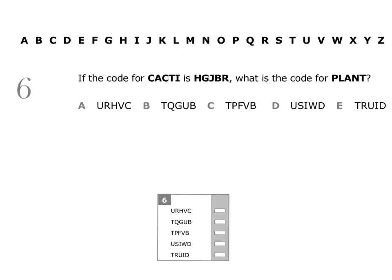Question six: if the code for cacti is HGJBR, what is the code for plant? Let's work out how we get the code for cacti. We start with C and the code gives us H. So how do we get from C to H? C is here, H is here, so we need to move on five letters.